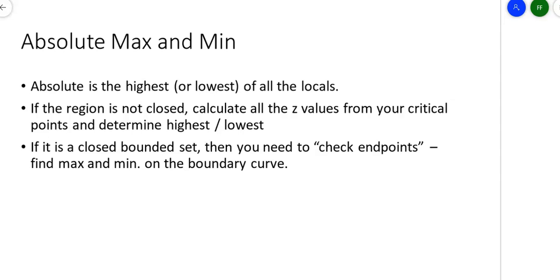In this second part, we'll take a look at absolute maxes and mins. We were looking at relative maxes and mins before, but the absolute is the highest or lowest out of all the local maxes and mins. So if the region is not closed, you calculate all the z values from your critical points and determine which one is the highest, which one is the lowest. So now, what happens if you have a closed bounded set?